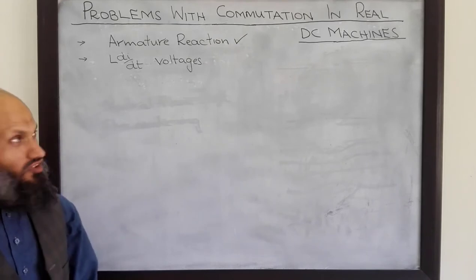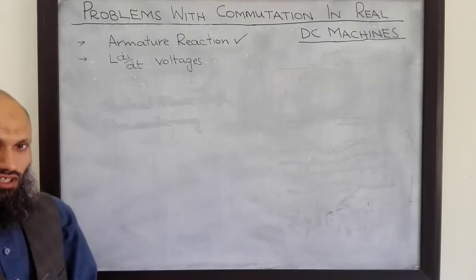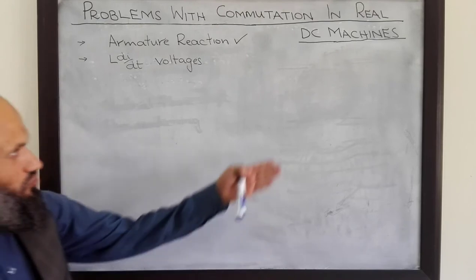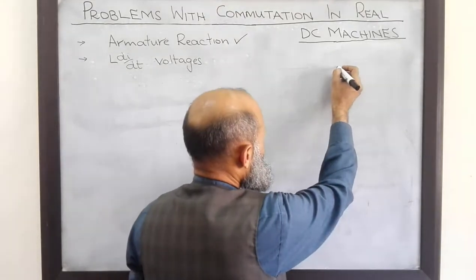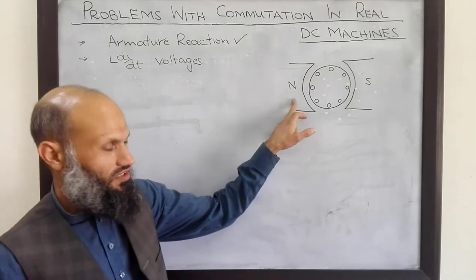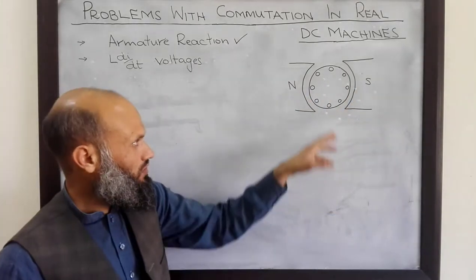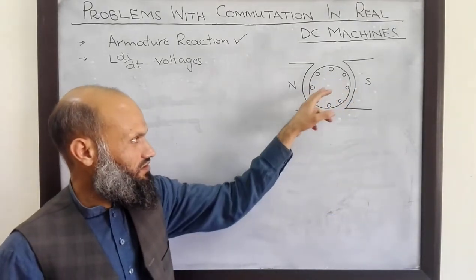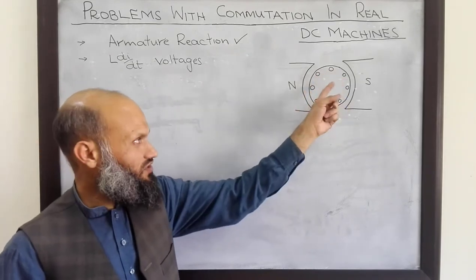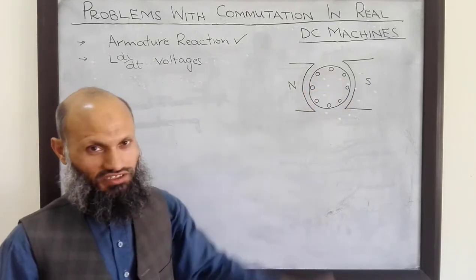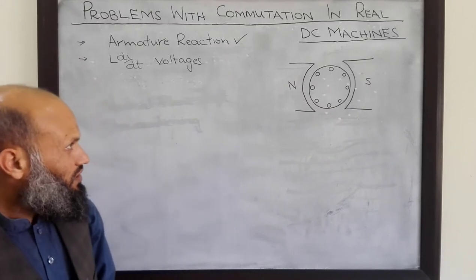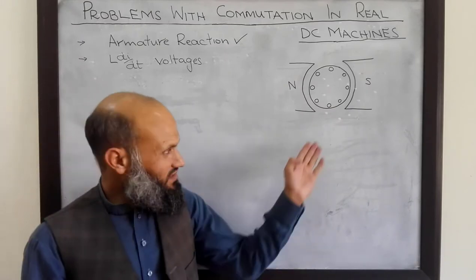To understand the phenomena of armature reaction, let's consider a DC machine shown by the diagram here. We have a DC machine with a north pole and south pole, and eight conductors — eight coils — are shown on the rotor. The connection of these coils with commutator segments is not shown in this diagram.